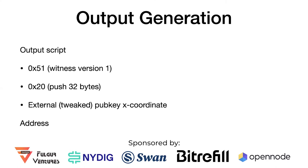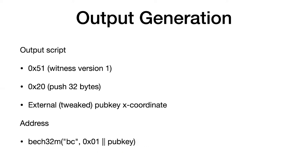For the address, when calculating it using bech32m, the human-readable prefix is 'bc' on mainnet, 'bcrt' on regtest, and 'tb' on testnet. The value you encode is the pubkey with a 0x01 prefix — one byte indicating this is taproot and not SegWit — which also tells address decoders to use the bech32m decoding scheme rather than bech32. There was a vulnerability in bech32 discovered after SegWit, where a specific ending could be prefixed with characters without detection, hence the bech32m upgrade.